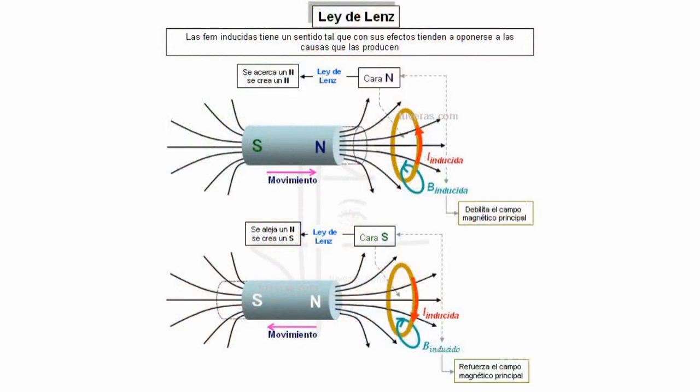These current loops interact with the magnetic field that induced the eddy current. According to Lenz's rule, in conductors they choose such a direction and path so that they resist the inducing field. Therefore, good conductors moving within intensive magnetic fields have a strong inhibition caused by the interaction of currents with the magnetic field.